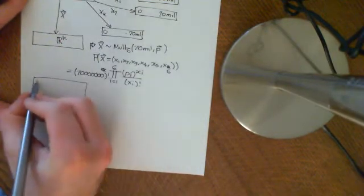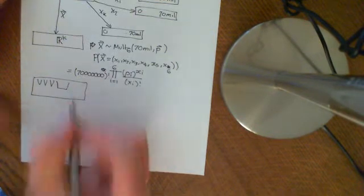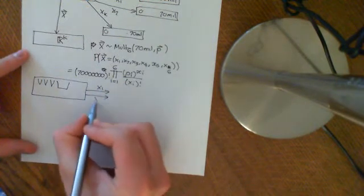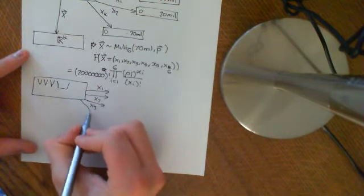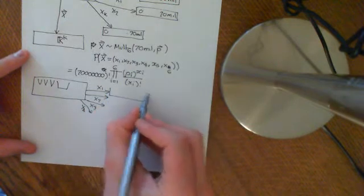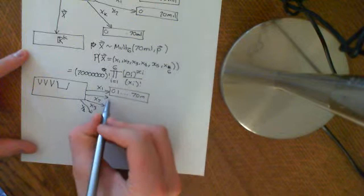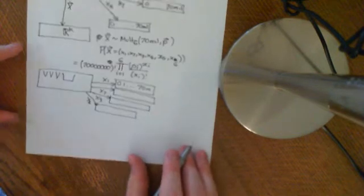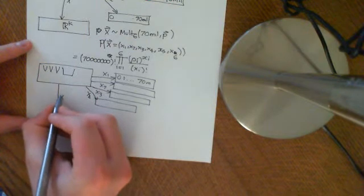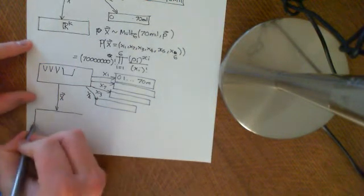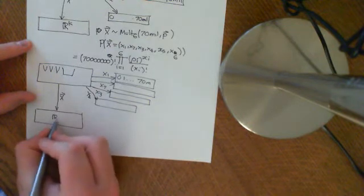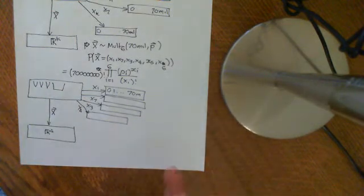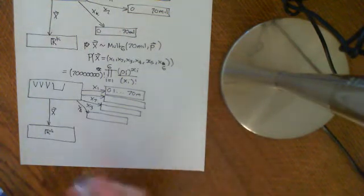If we have four baskets now — one, two, three, and then this super basket which is the lump of them all — then we have all the possible outcomes, and we put four random variables: x1, x2, x3, x4, which all map onto 0 to 70 million. And then we want this vector, which is now a four-component vector X mapping onto R^4. Well, it's exactly the same problem — you're just now considering four baskets rather than six baskets. That's the beauty of this: if you union some of the baskets together, it still forms a multinomial distribution.